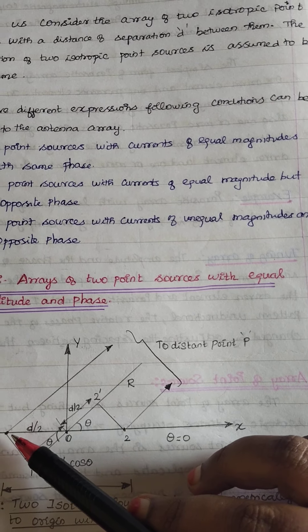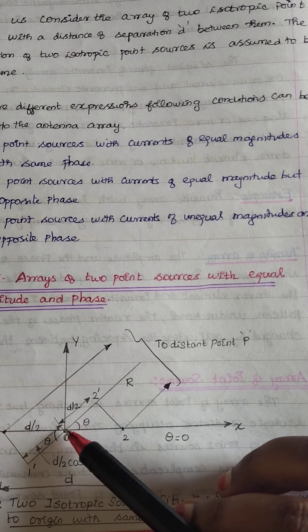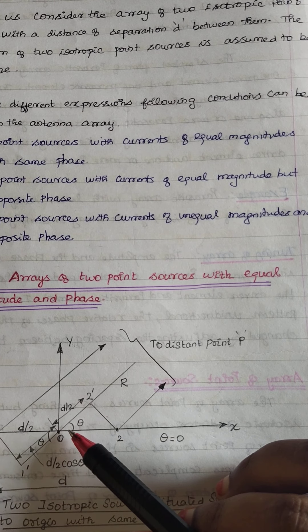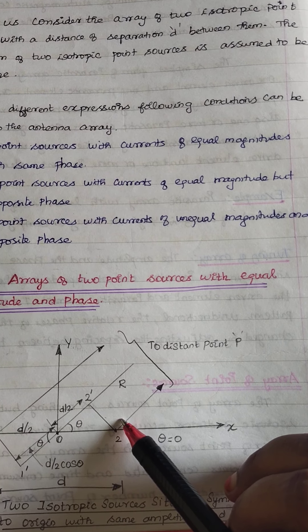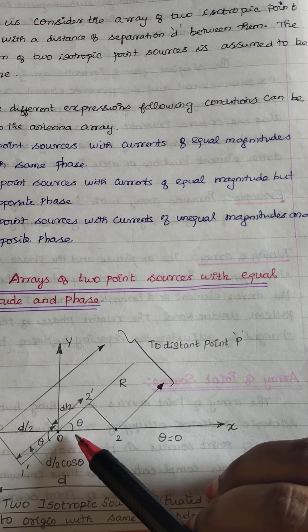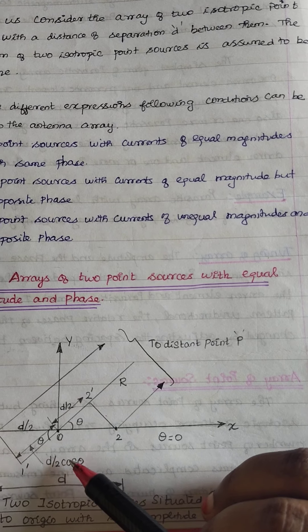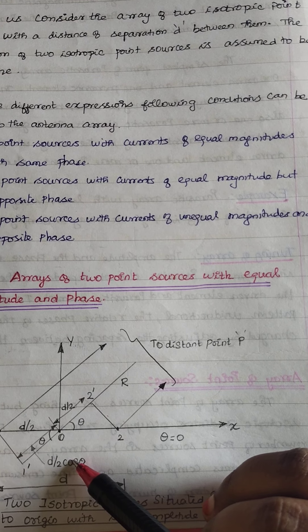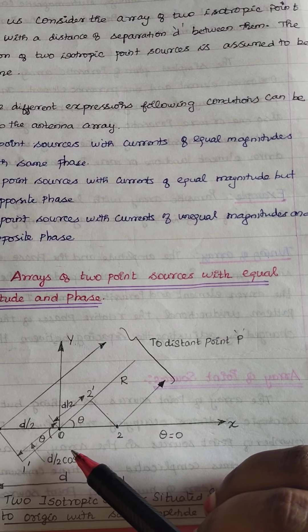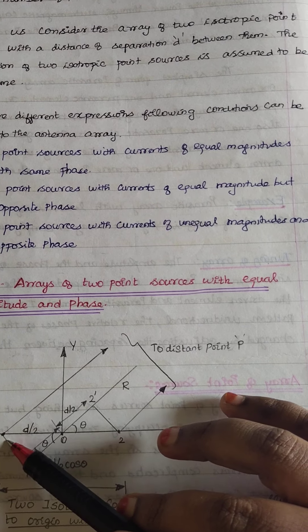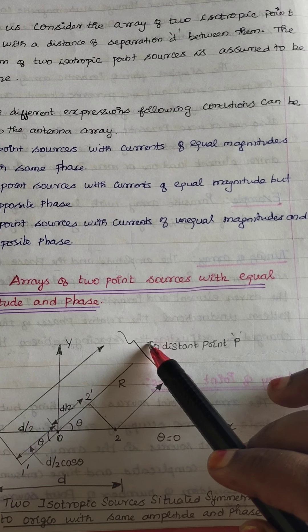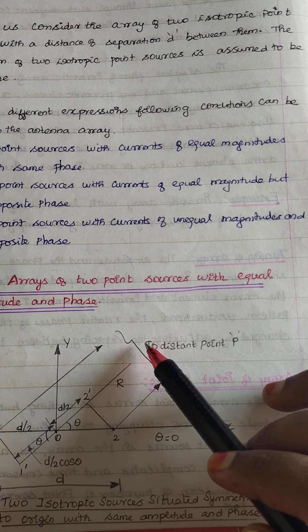The distance between antenna 1 and the center point 0 will be D by 2, and from 0 to antenna 2 will also be D by 2. The path difference in terms of angle theta is considered as D by 2 cos theta. The first and second antennas are at equal amplitude and phase.